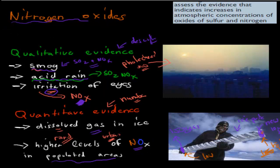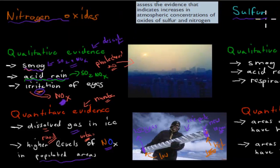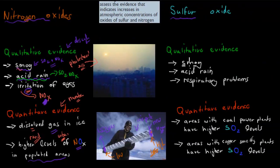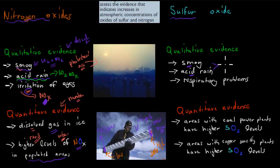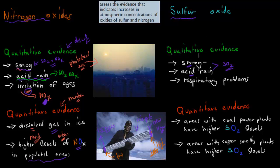Now for sulfur oxides, we have the same qualitative evidence. We've got lots more smog and acid rain, and these come not only from the oxides of nitrogen but also from sulfur dioxide. So the more we observe these, our descriptive evidence suggests that there is more sulfur dioxide as well.